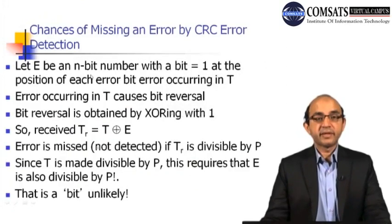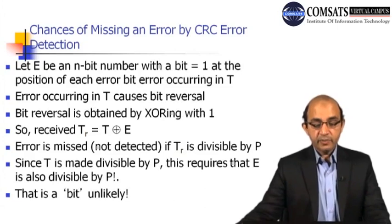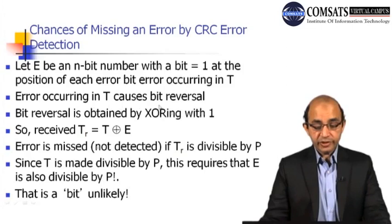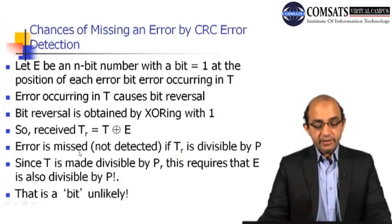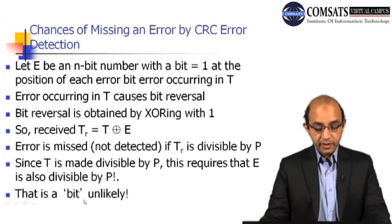There are cases where CRC cannot detect an error. Let e be an n-bit number with a 1 at the position of each error bit. An error in the received frame t causes bit reversal, obtained by XORing with 1. The received frame tr equals t XOR e. An error is missed — not detected — if tr is divisible by p. Since t is made divisible by p, this requires that e also be divisible by p, which is unlikely to happen.